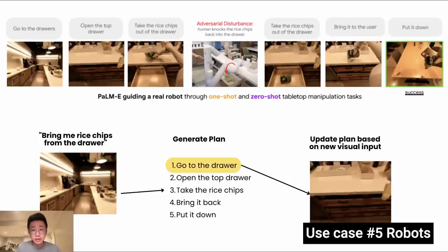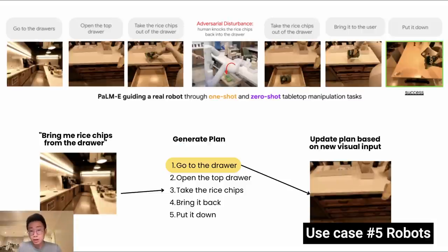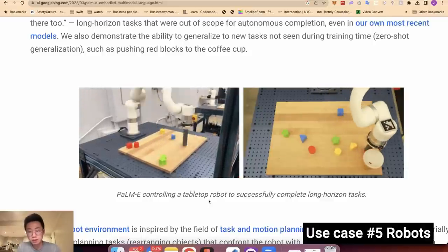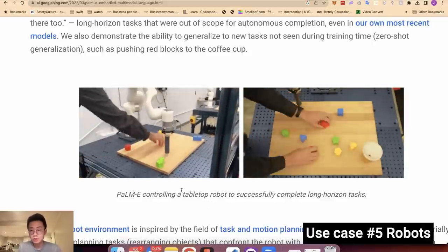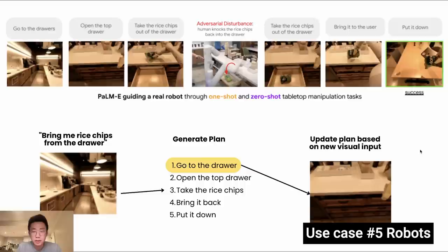The last use case is really inspiring — it's from Google. In the Google PaLM-E research paper, they integrate a multimodal model with a robot. Given a prompt like 'bring me the rice chips from the drawer,' the robot generates a plan like a normal agent based on both visual and text inputs, then starts executing the task. As the robot moves and receives new visual inputs, it updates the plan accordingly. This allows the robot to complete very complex tasks, showcasing what is possible with multimodal models.